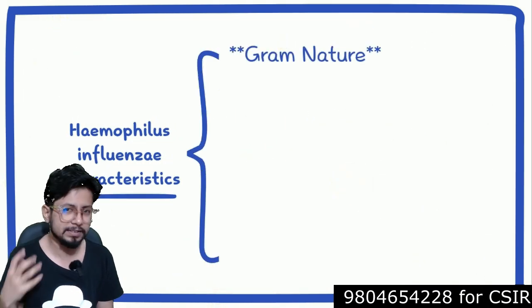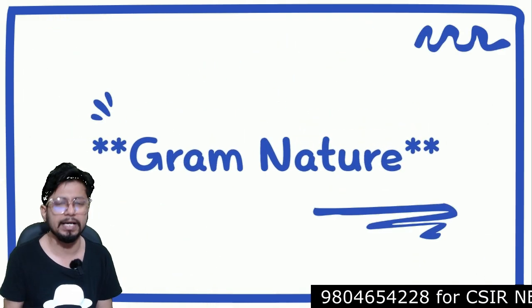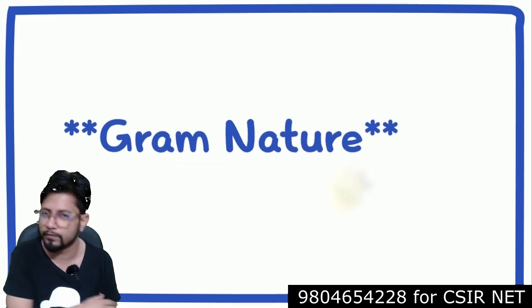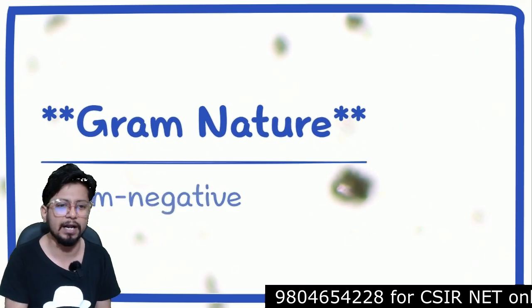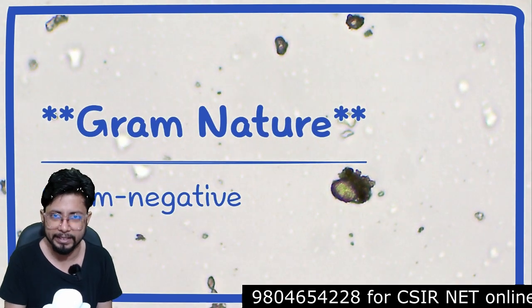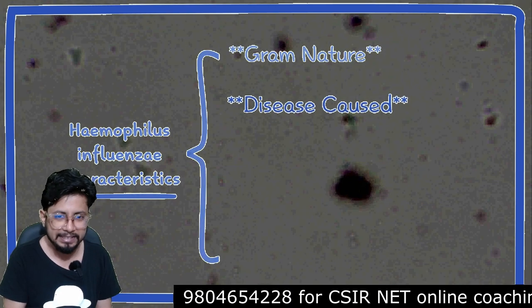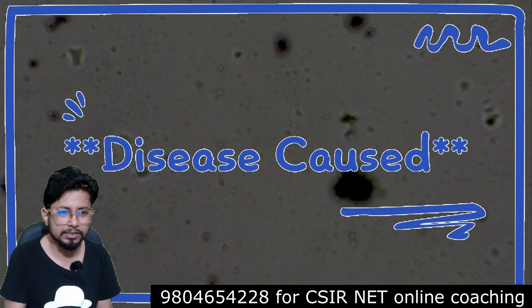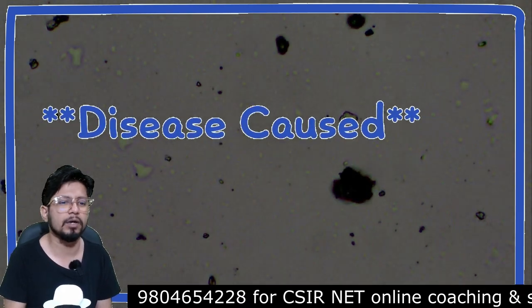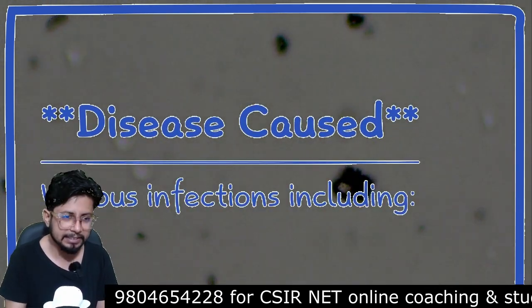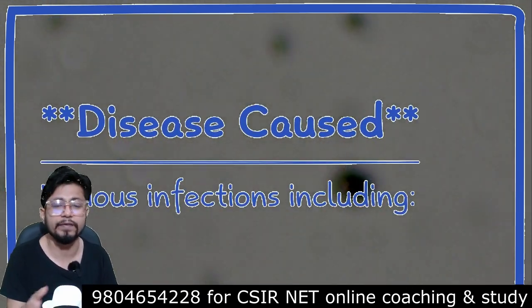Haemophilus influenza is a gram-negative bacteria. The next important feature we want to talk about is the disease that it causes — the various infections it is associated with.